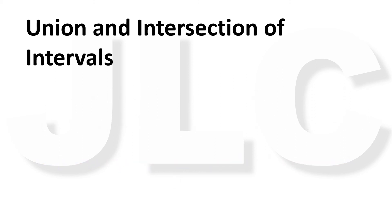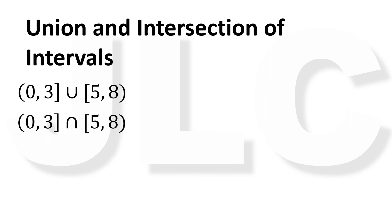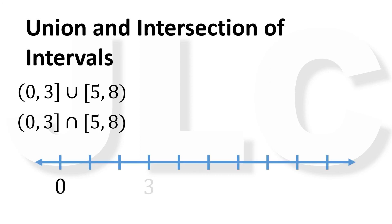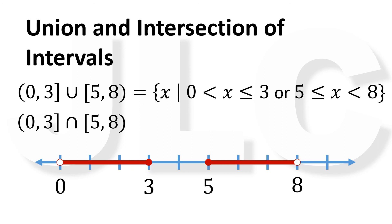Now, what is the union and intersection of the left-open interval from 0 to 3 and the right-open interval from 5 to 8? The union cannot be simplified into a single interval because of the discontinuity, so the interval notation remains as is. In set builder notation, this is the set of all x such that x is greater than 0 but less than or equal to 3, or x is greater than or equal to 5 but less than 8. The line segments do not overlap, so they do not have an intersection — the intersection is the empty set.